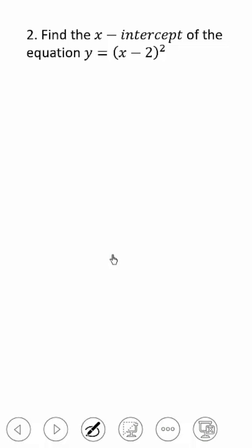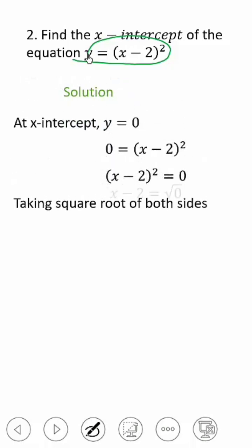When you are given just the equation of the graph, you can also find the x-intercept by putting y equals 0, then you solve for the value of x. That will give you the x-intercept.